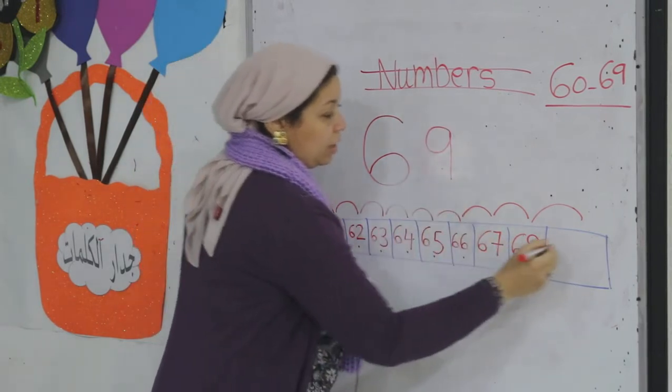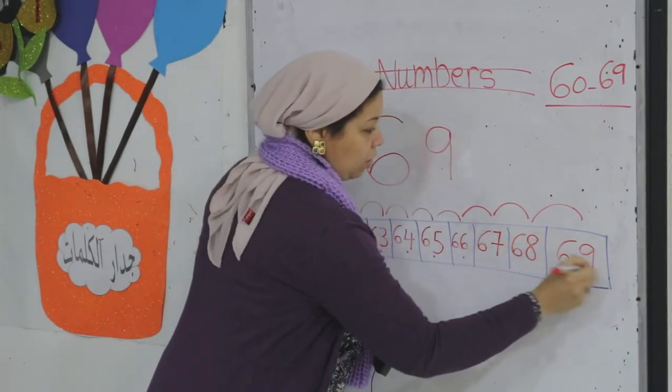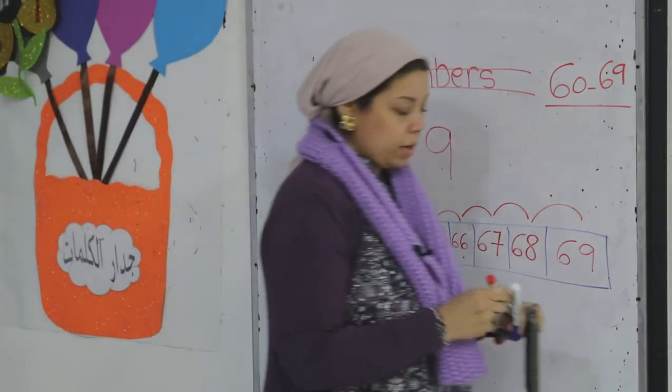And the last number, 69. 6 and 9. It's going to be 69. Okay? Let's practice on the whiteboard.